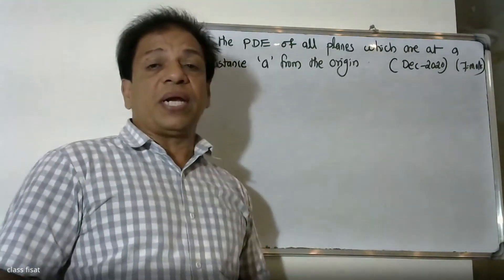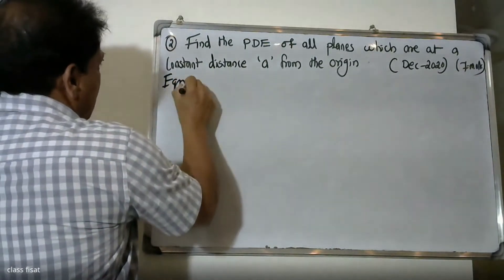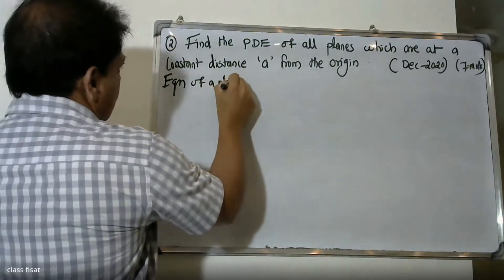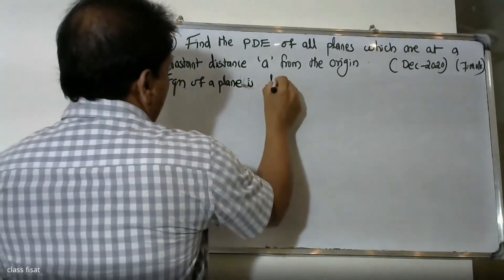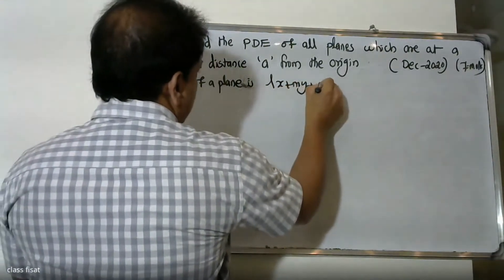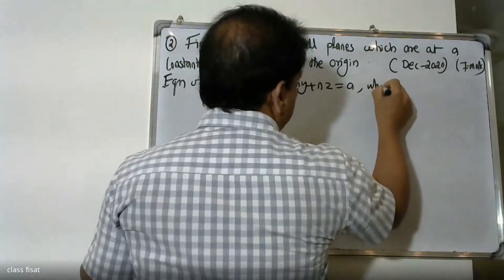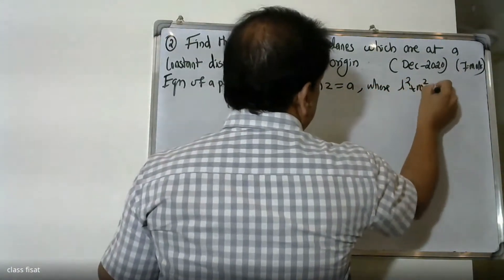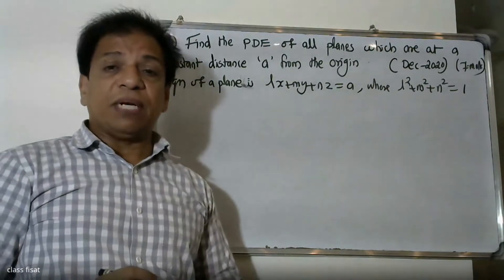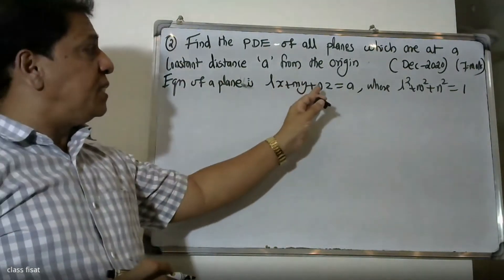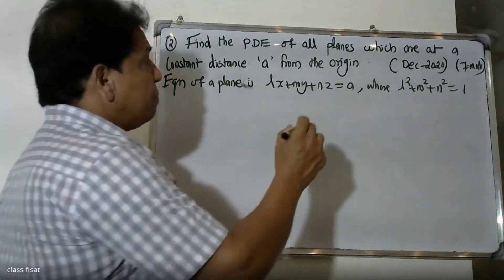We will work out this problem. The equation of a plane is LX plus MY plus NZ is equal to A, where L square plus M square plus N square is equal to 1. This is equation (1).